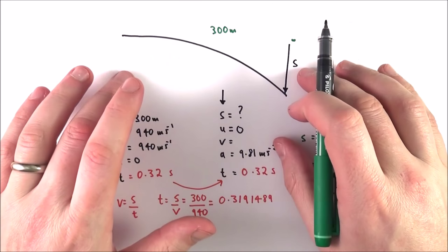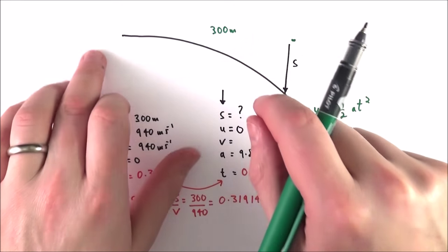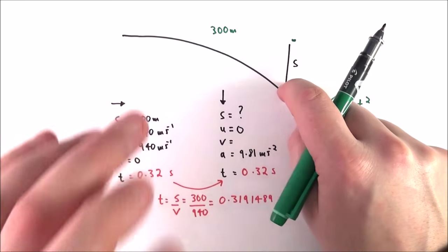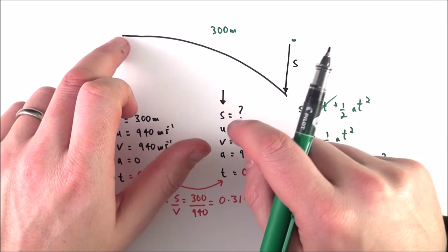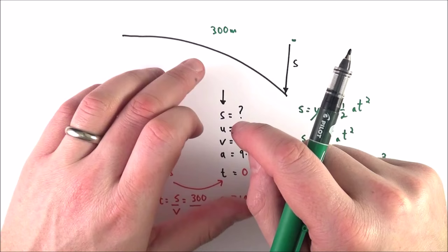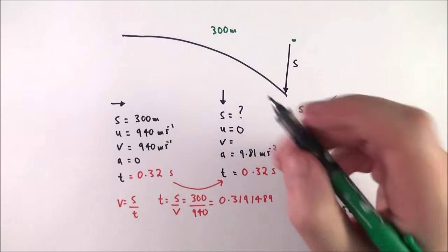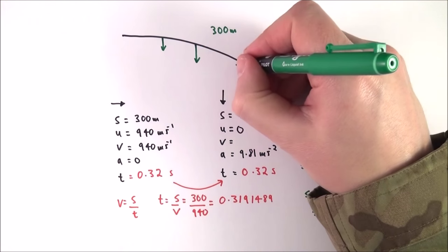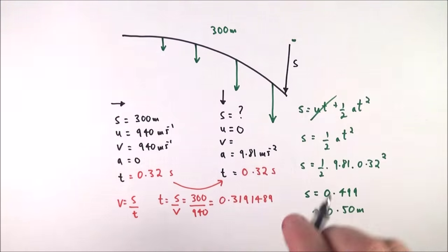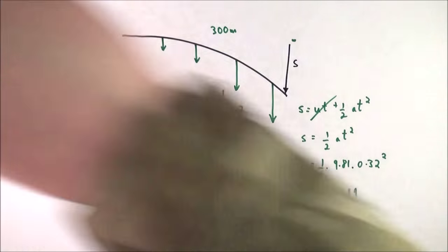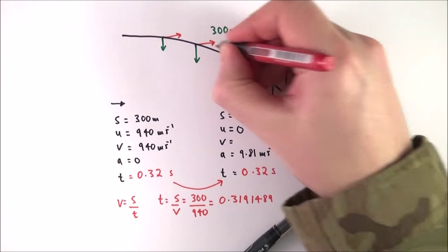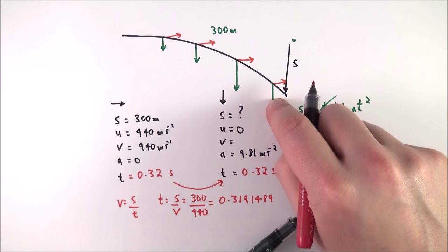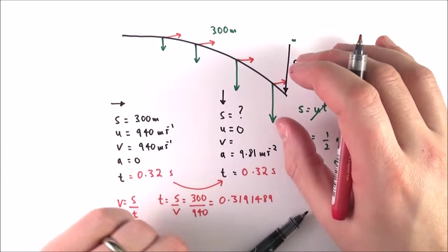But that's just one example. We can look at projectile motion perhaps maybe marbles falling off a desk, it might be water leaving a hose pipe, or it might even be perhaps the motion of a charged particle in an electric field. The important thing is that the vertical velocity gets bigger and bigger as time goes on, but the horizontal velocity always has the same magnitude because there's no force in that horizontal direction.